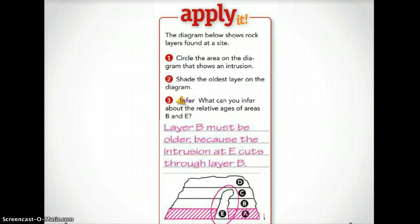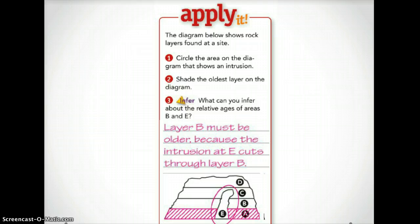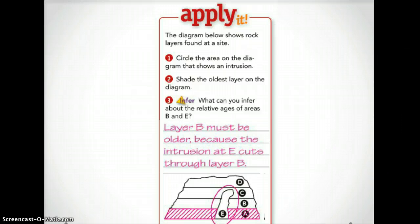In this image, the circled layer — layer E — is an intrusion. The shaded layer, layer A, is the oldest layer. You can assume that layers B and C are older than layer E because layer E cuts through them. The order of these rock layers from oldest to youngest would be layer A, layer B, layer C, layer E, and last, layer D.